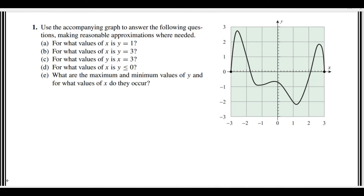The question says that you are given a graph and then you have to answer the following questions. The first one is: for what values of x is y = 1? That means we have to draw the line y = 1 on the graph, and then from the graph we have to find the x values where y = 1 touches the graph.